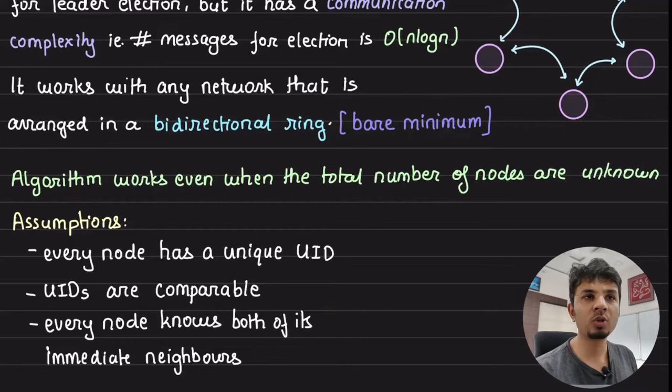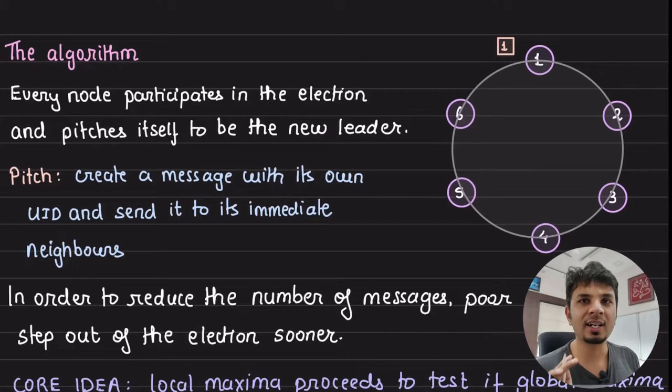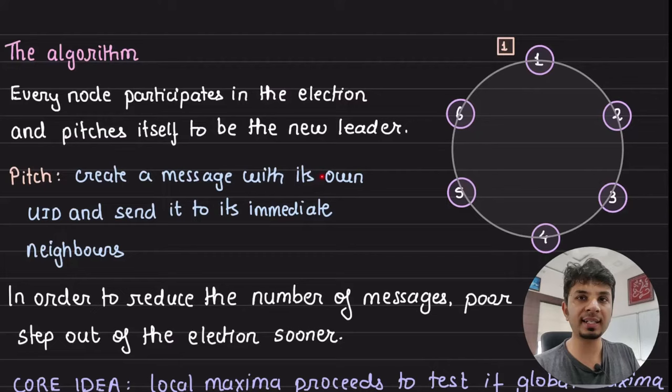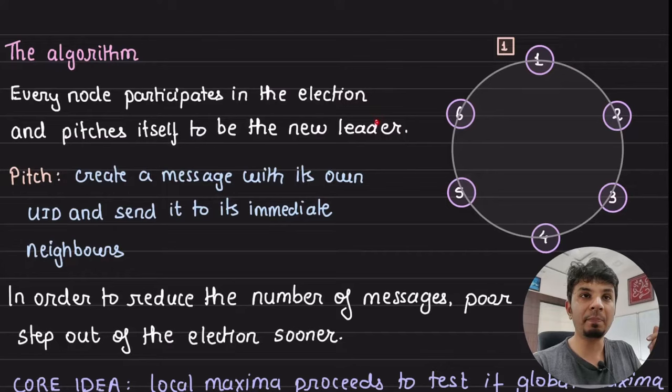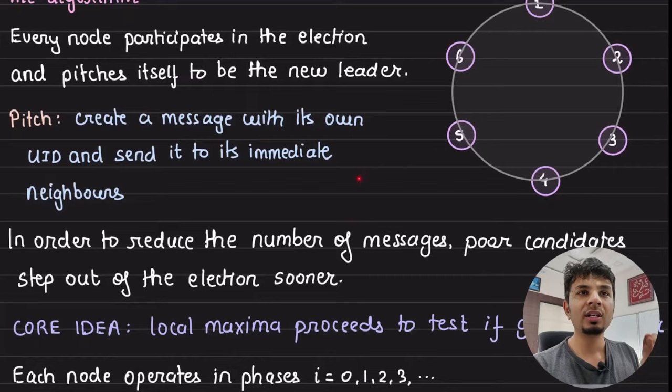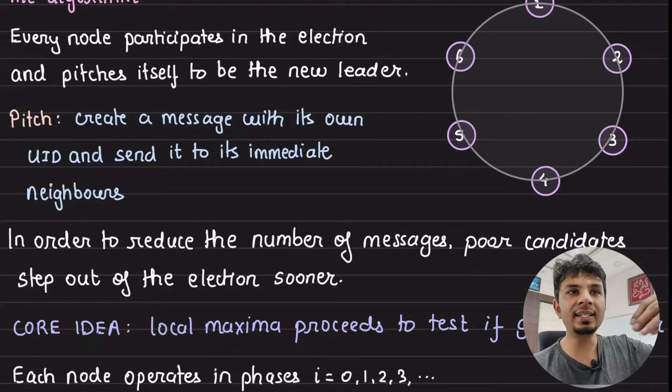When a node detects that a leader is down, it triggers a leader election. Because it is synchronous, every node knows that an election is starting, and every node participates by pitching itself to be the new leader. Every node creates a message with its own UID — its own candidature — and sends it to its immediate neighbors. There are two neighbors: one in the clockwise direction and one in the anticlockwise direction.